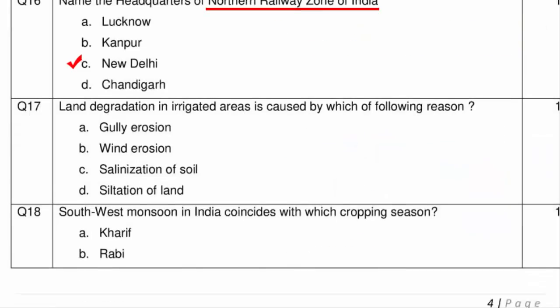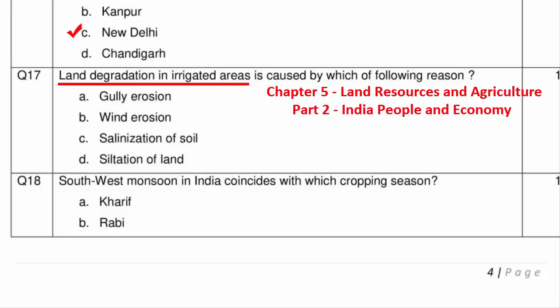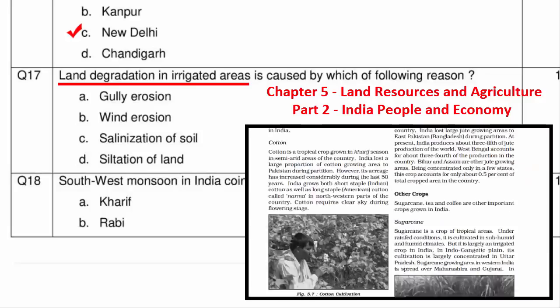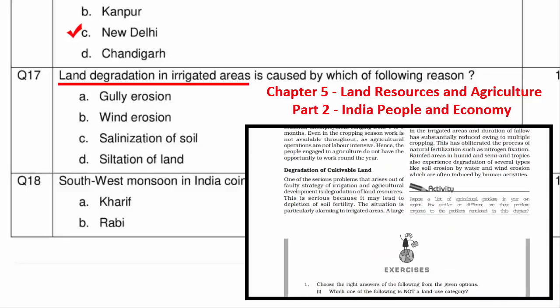Question 17 asks about land degradation in irrigated areas. This is from Chapter 5 Land Resources and Agriculture, Part 2 book. The same question can also be framed as 'which is the main form of degradation in irrigated areas.' The answer is Option C — salinization of soil — which means an increase in salt content in the soil that decreases soil fertility.